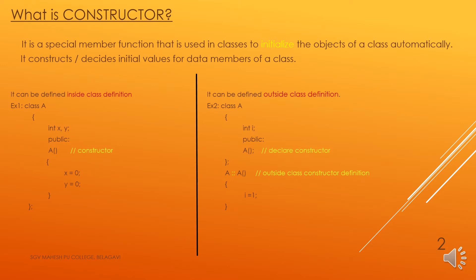A constructor can be defined either inside a class or outside a class definition. For example, I have created a class A with two private members X and Y and one constructor. The constructor has the same name as the class A, and I will initialize the values of X and Y as 0. This is a constructor defined inside the class.